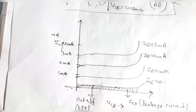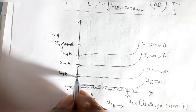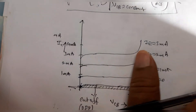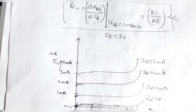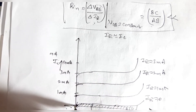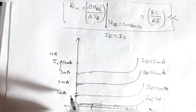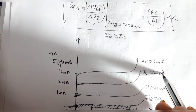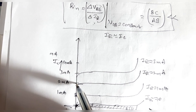Even when the collector-base voltage (output voltage) is zero, a collector current already exists. This is because the emitter current is almost equal to the collector current. So when IE is already 1 mA, IC starts from nearly 1 mA; when IE is 2 mA, IC starts from 2 mA even at zero output voltage. To bring the collector current to zero, you must apply a forward bias collector-base voltage.